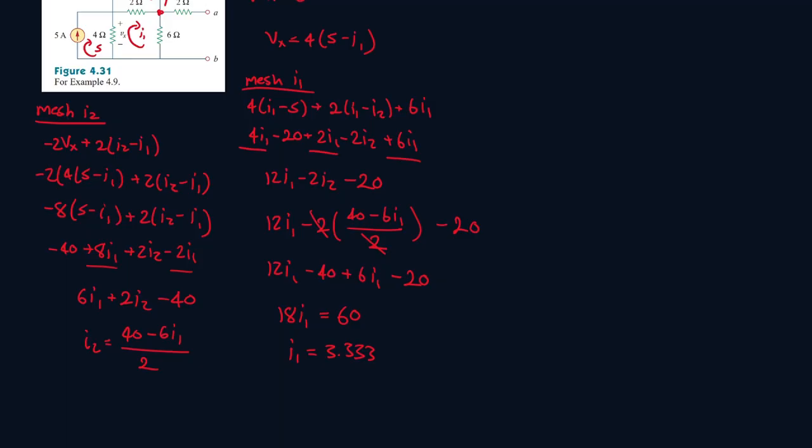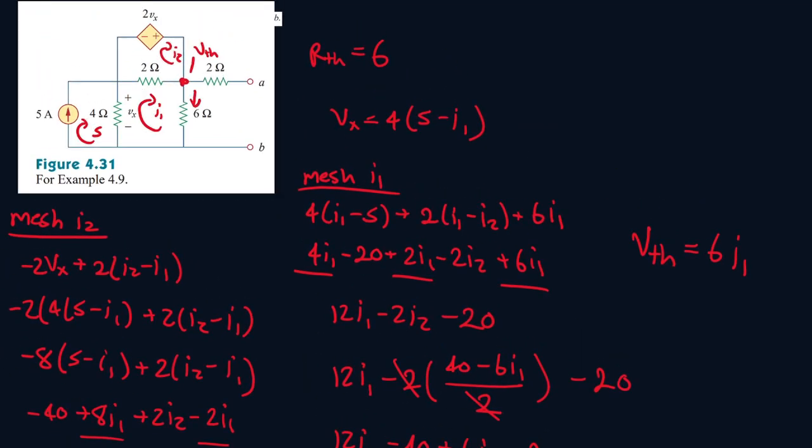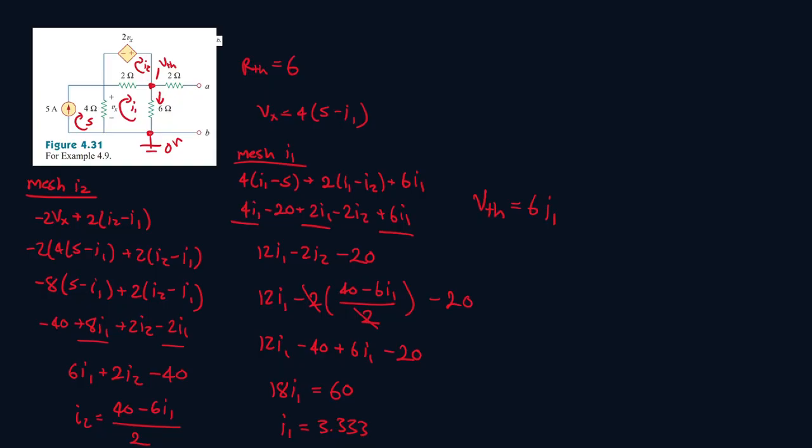And now we can find VTH. VTH will be 6 ohms times I1, because as the current goes downwards, it drops until it hits the ground node, which is 0 volts. So VTH minus the value gives 0. So that means that value has to also be equal to VTH. So it will be 6 times 3.333. And that gives you 20. So VTH is equal to 20 volts.